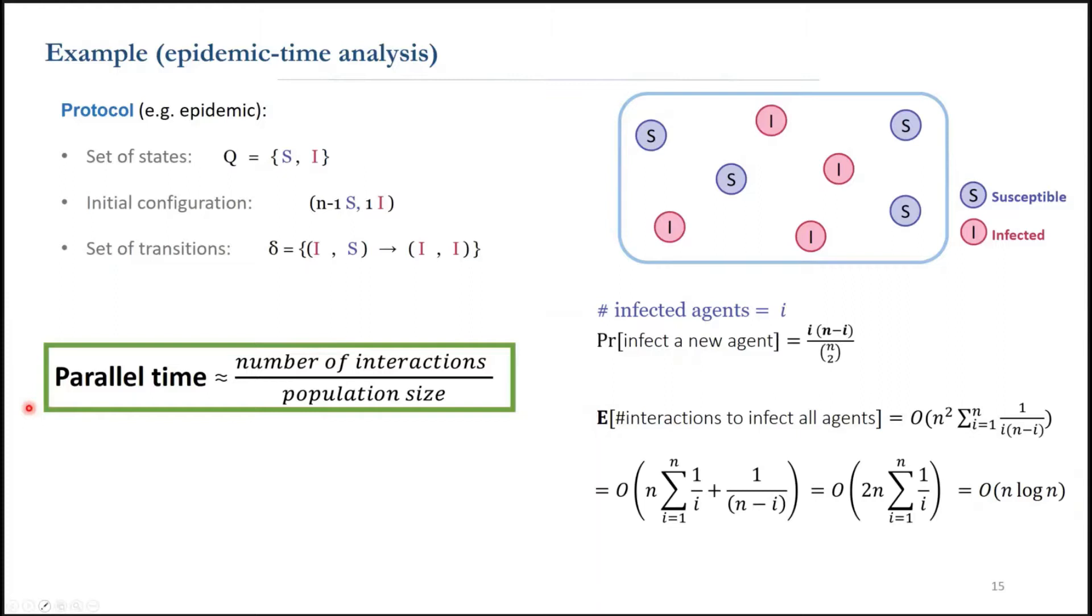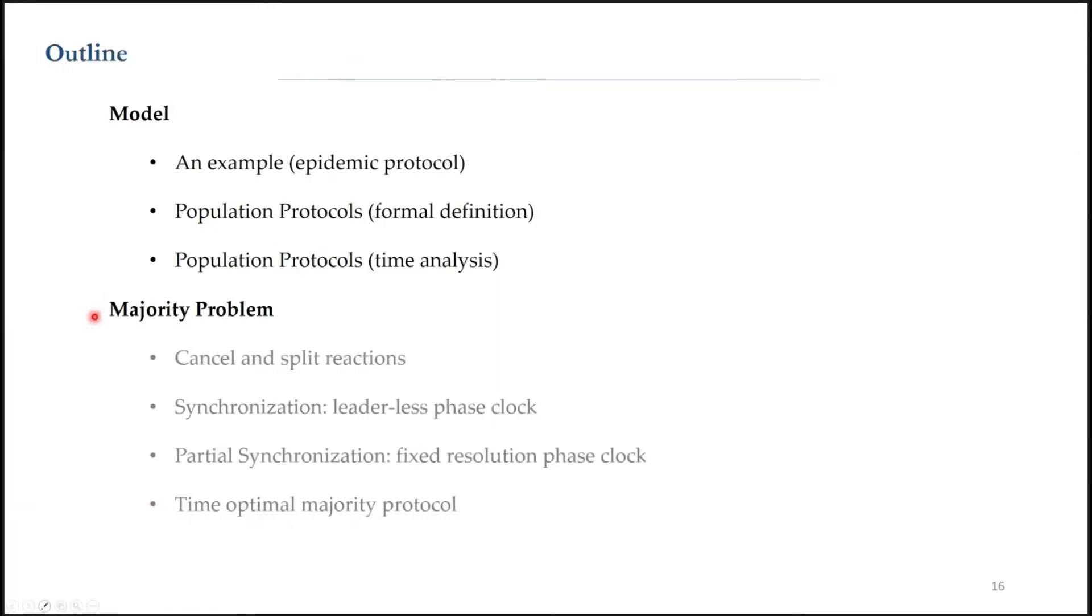We define time as the number of interactions divided by the population size. Roughly speaking, giving each agent one interaction per unit of time. So the time complexity is actually log n. Now that we learned about the model, it's time to talk about the majority problem.